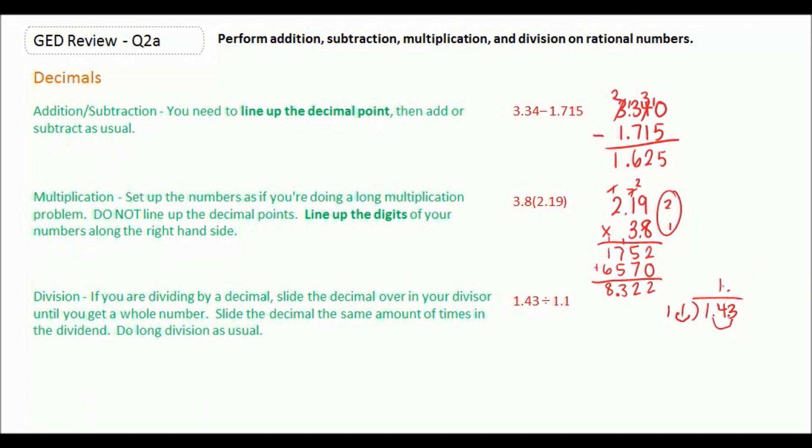So 11 goes into 14 once with a remainder of 3, and we bring down our 3. And 11 goes into 33 three times with no remainder. So our answer is 1.3.